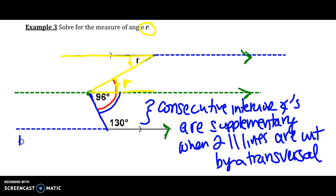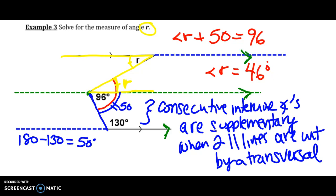180 minus 130 degrees equals 50 degrees. So we know this blue angle right here is 50. We know in total this red angle is 96. And we know that angle R plus the 50 degrees equals the 96-degree angle. So angle R equals 46 degrees.